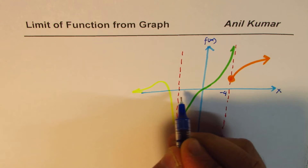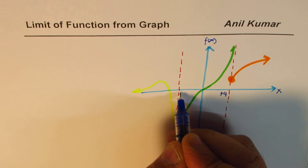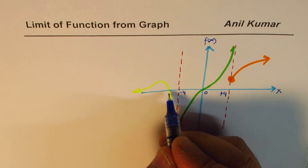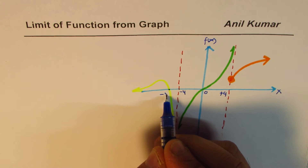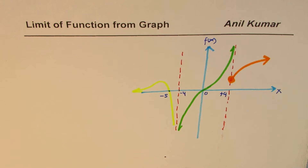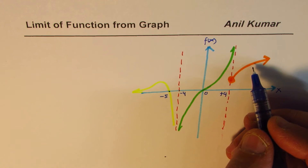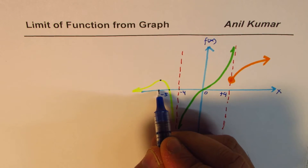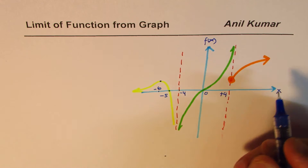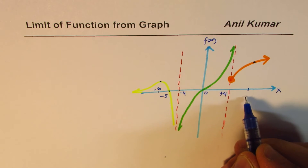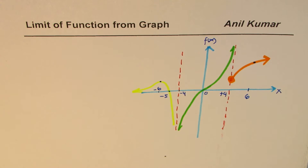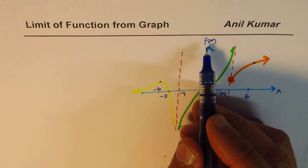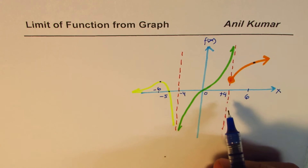Let's say this point is minus 4, this is of course 0, and let's say this point is minus 5. Let's keep some other points also in the graph — let's say this maximum value is at minus 6. One more point: let's have a point here which is 6. So we have a graph and we'll try to read limits at a few points.